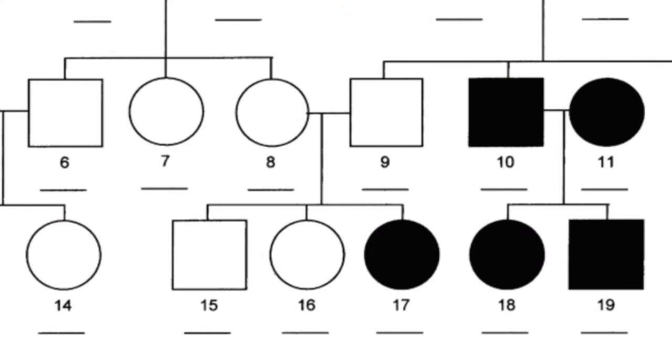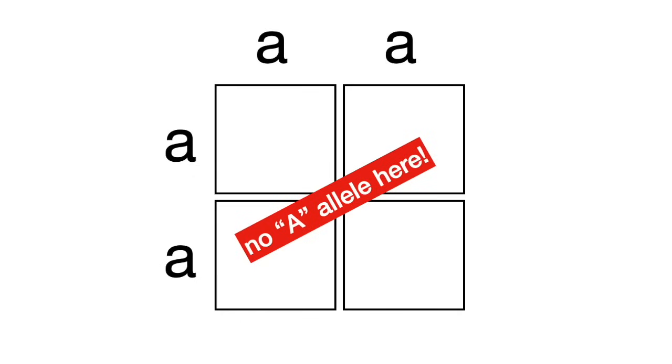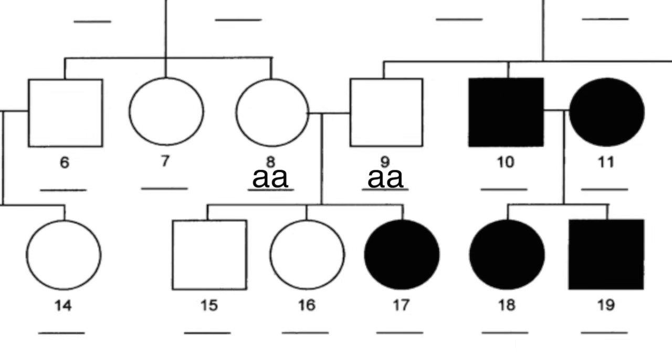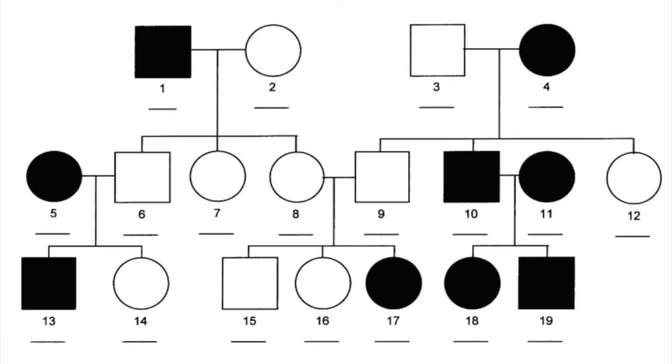Let me explain why. If this were an autosomal dominant disorder, individuals 8 and 9 — who are not affected — would both have homozygous recessive genotypes, little a, little a. If that's the case, there's no way a cross between two homozygous recessive individuals would result in a dominant allele in the next generation. This is not counting de novo mutations, but for AP biology purposes, this is almost a guarantee to eliminate autosomal dominant, which means we can say this is an autosomal recessive disorder.